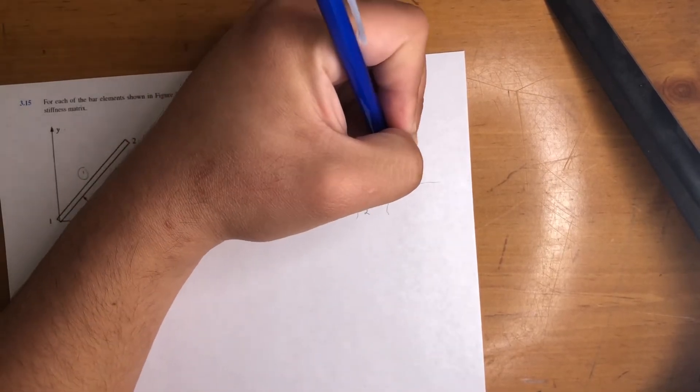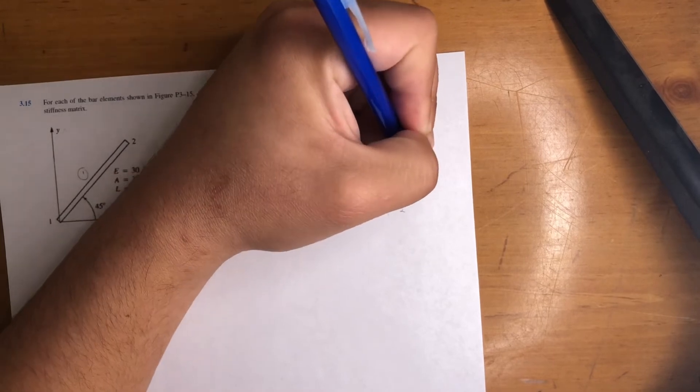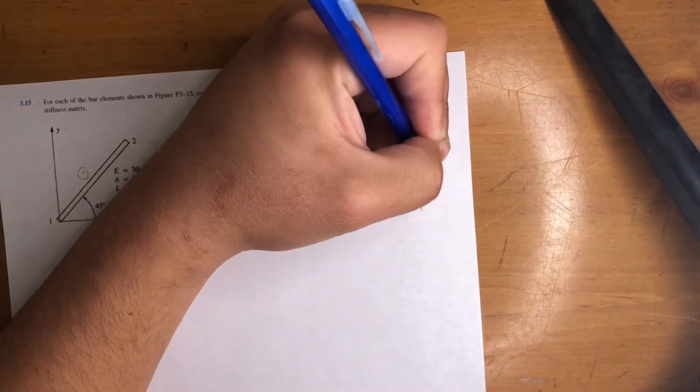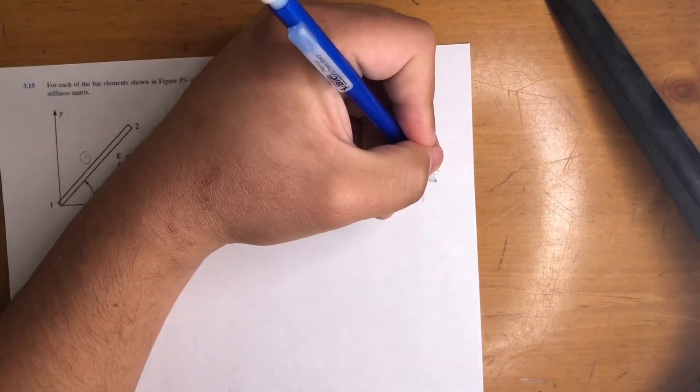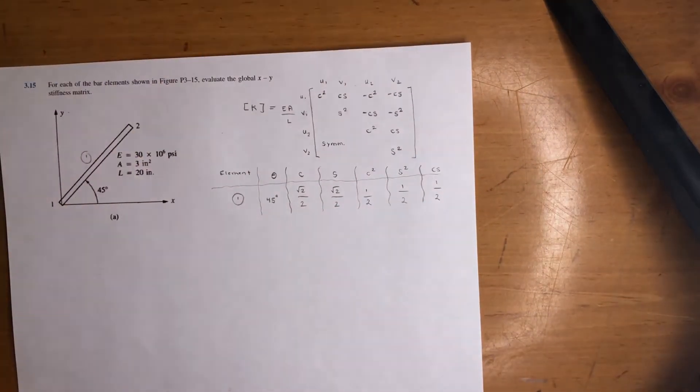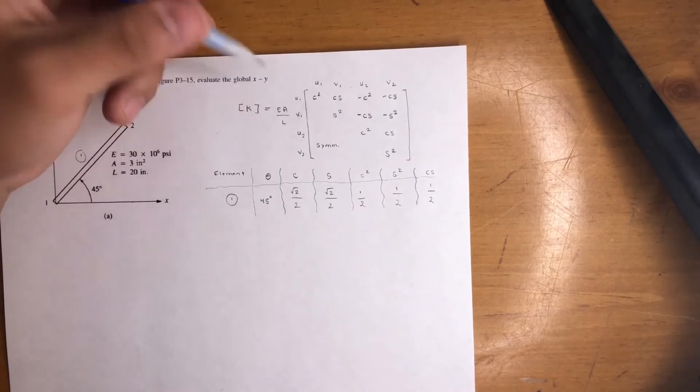You square them, so cosine squared is just one half. Similarly sine squared is one half. And finally Cs—cosine times sine—which in this case is also one half. That's pretty much it. You'll need one more thing: EA over L.